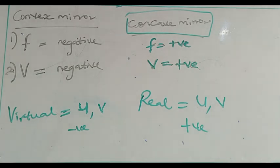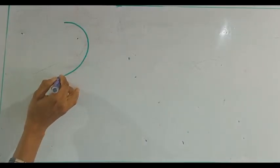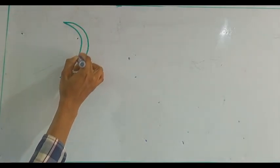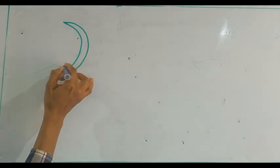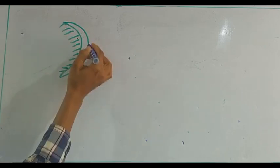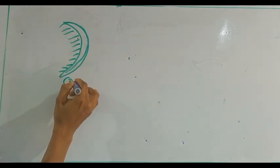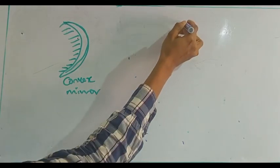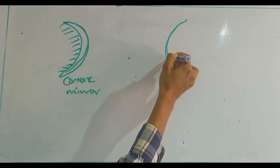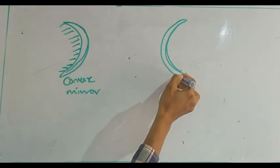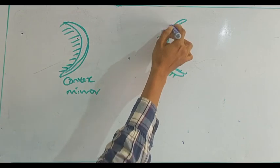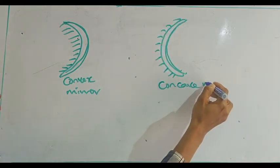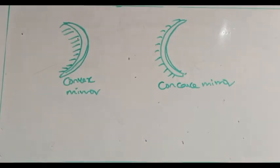How does a concave mirror look compared to a convex mirror? Let this be the reflecting surface. If we have it coated at the back and bulging out, this one is a convex mirror. But if we have it as a reflecting surface and coated at the back the other way, we have a concave mirror. Now let's look at the mirror formulas.